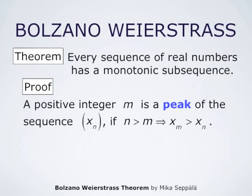So m is a peak of the sequence x_n if whenever n is larger than m, x_m is larger than x_n.